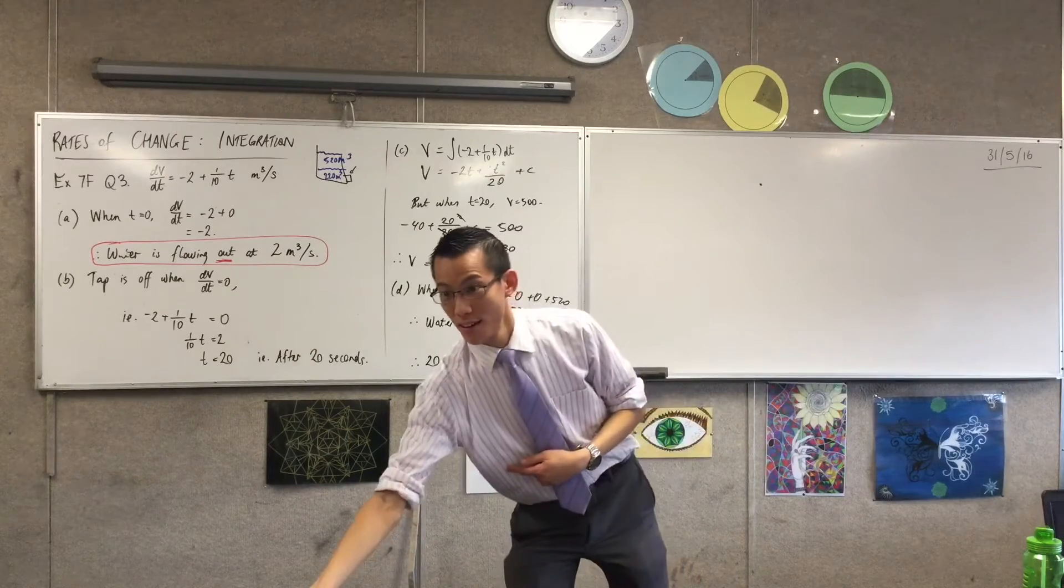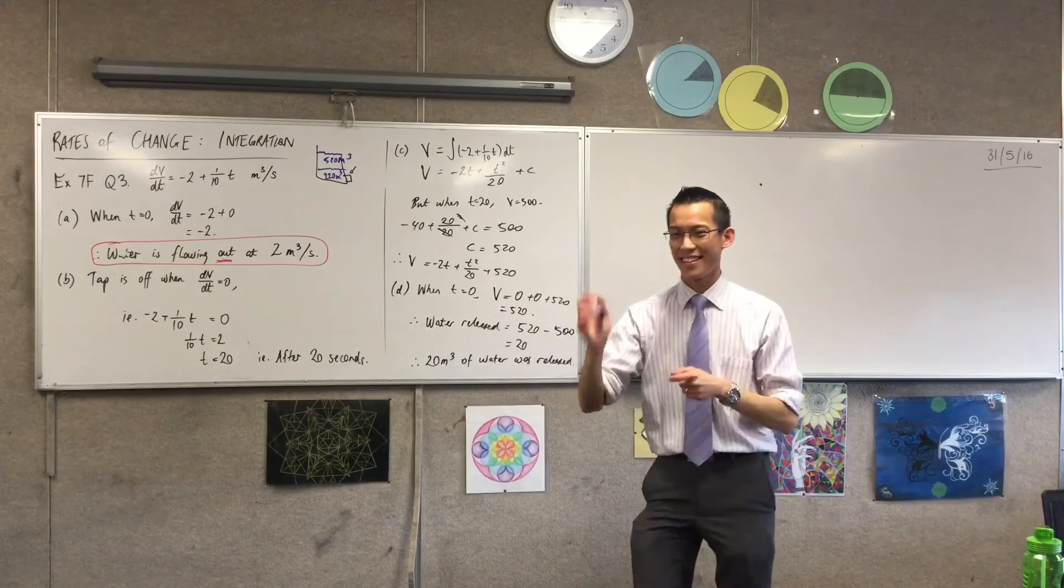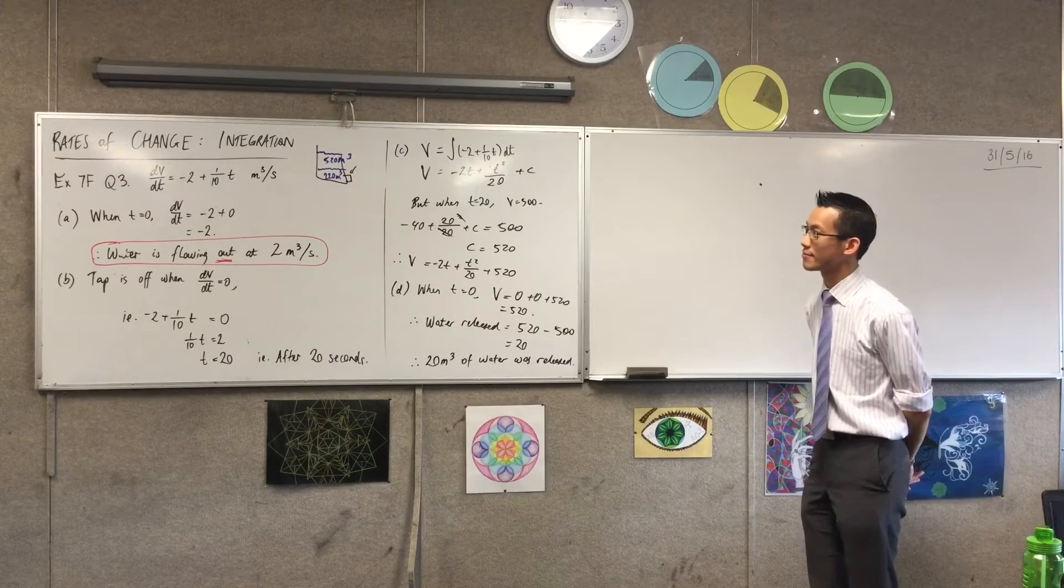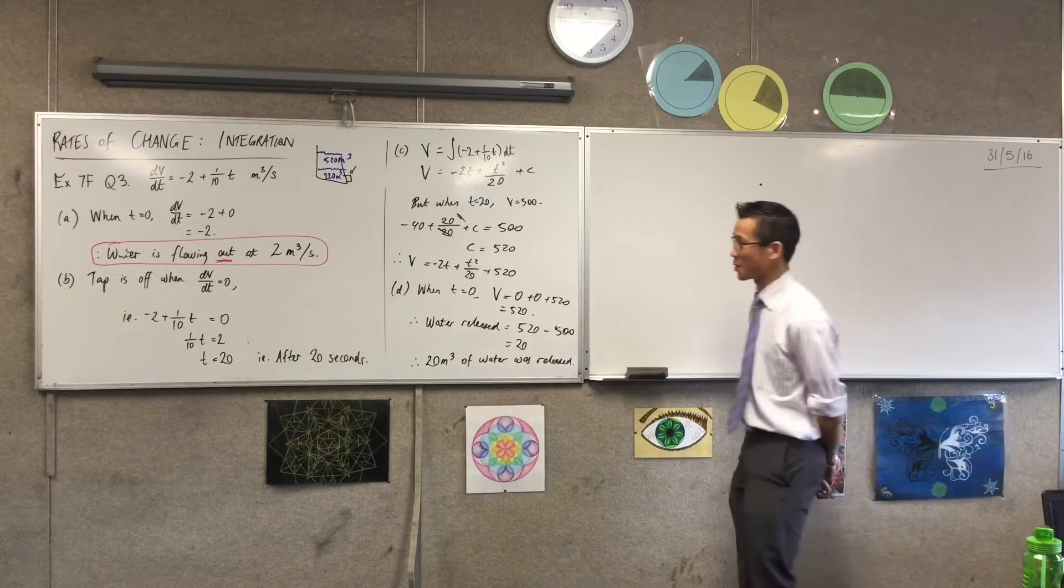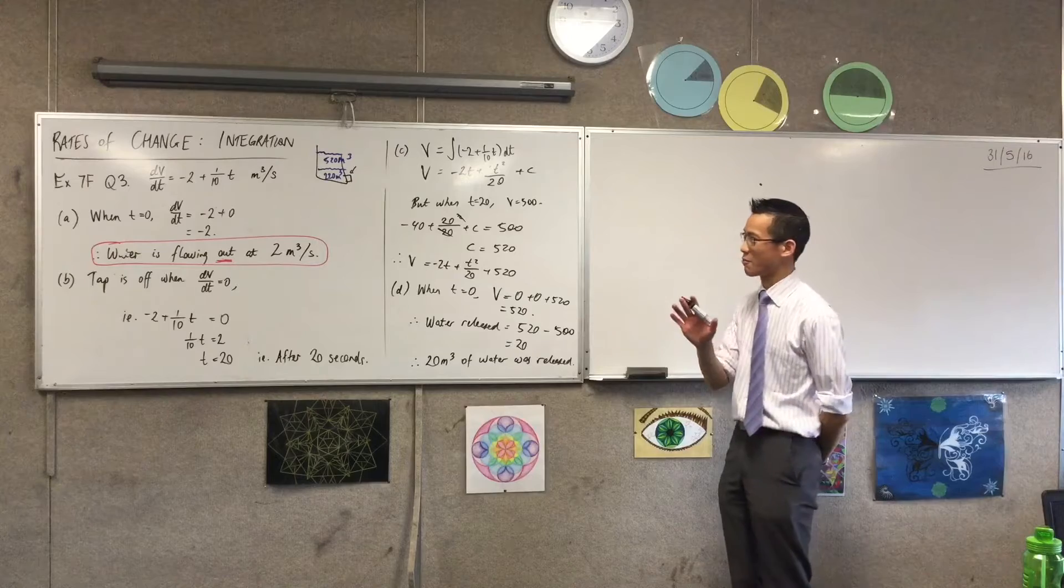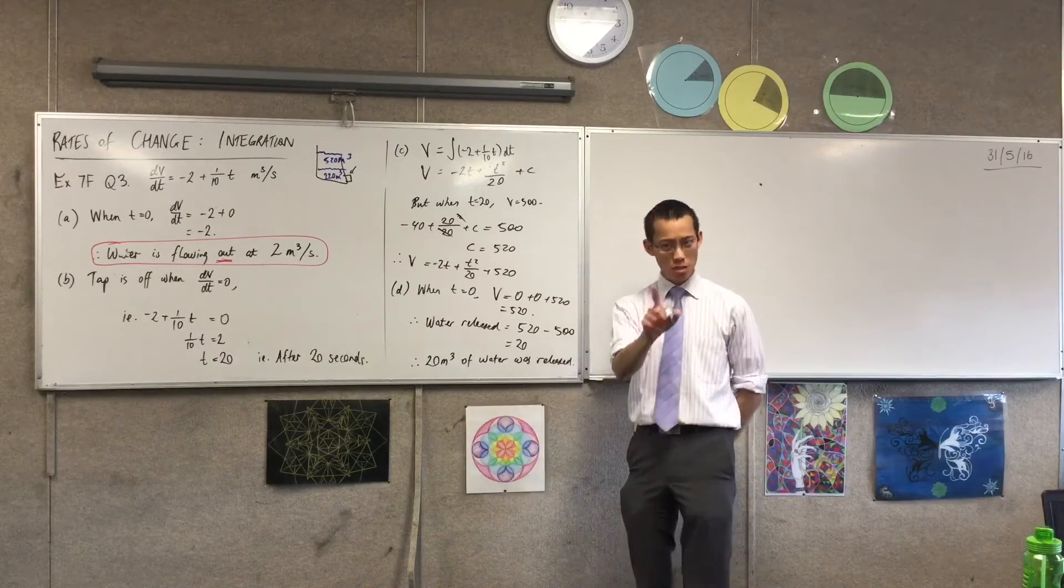So here's the way I'm going to... Yes? Can you make -2t + t²/20 equal 280? Ah, okay. So this is interesting, right? Because the first thing you might think is, it's not 280,